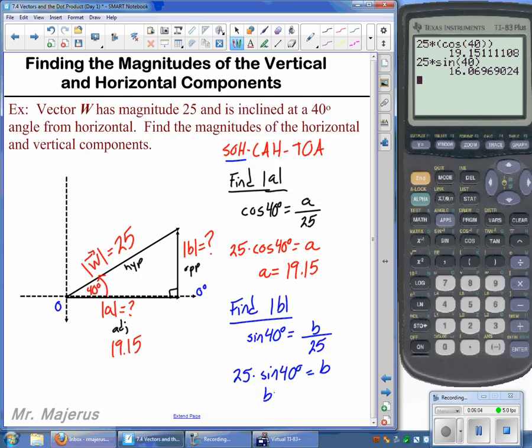So B is equal to 16.07. So there is then the magnitude of our vertical component. Here is the magnitude of our horizontal component, and that's what we're supposed to find. Thank you.